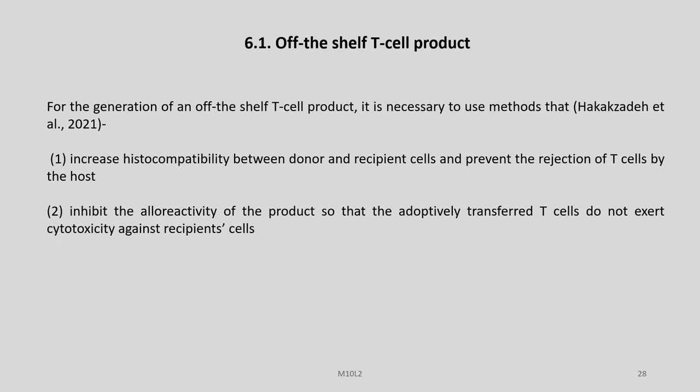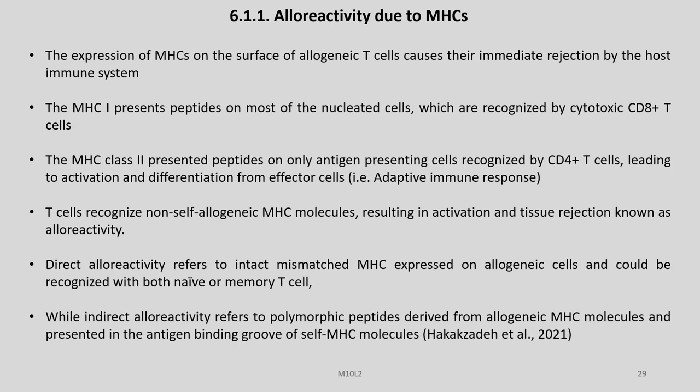Let us start with off-the-shelf T-cell products. For the generation of an off-the-shelf T-cell product, it is necessary to use methods that: number one, increase histocompatibility between donor and recipient cells and prevent the rejection of T-cells by the host; and number two, inhibit the allo-reactivity of the product so that the adoptively transferred T-cells do not exert cytotoxicity against recipient cells.